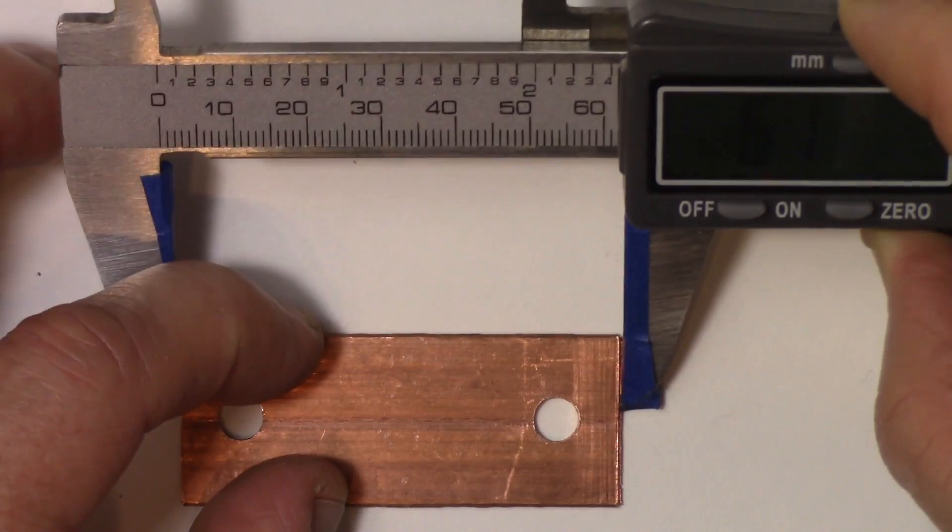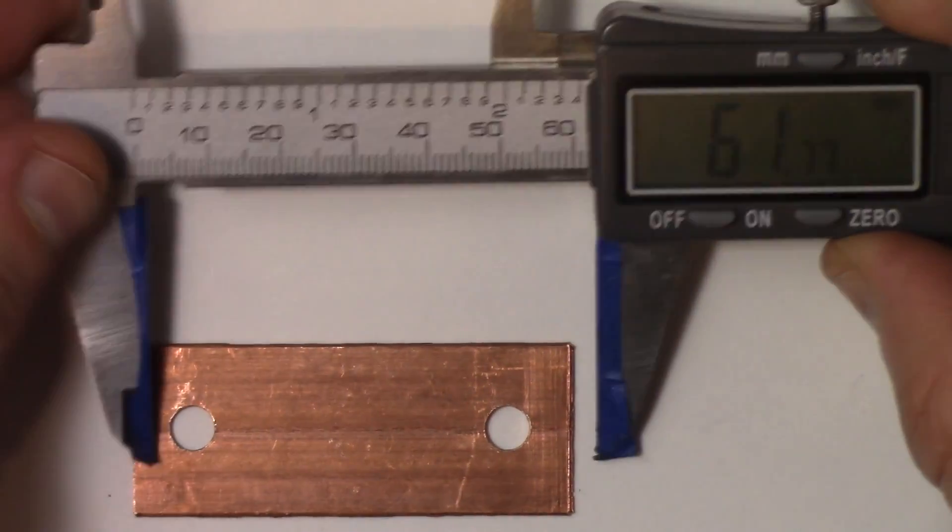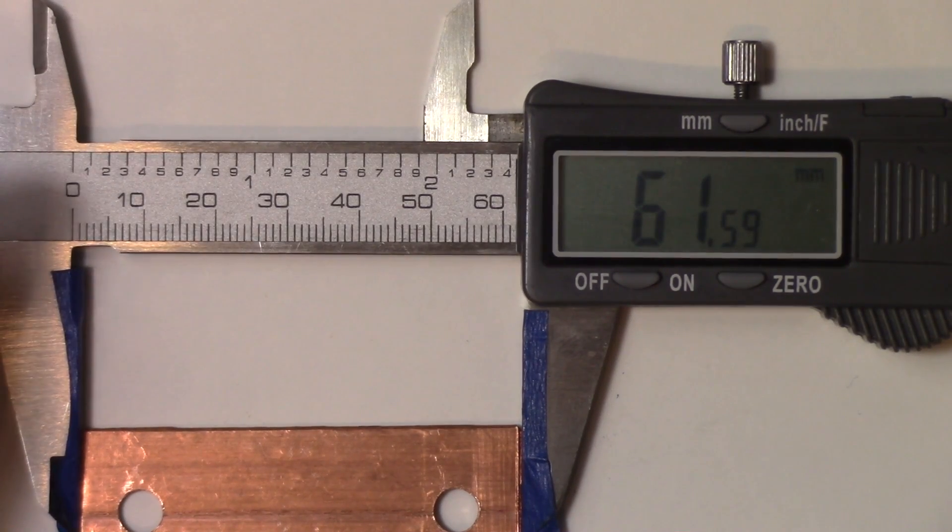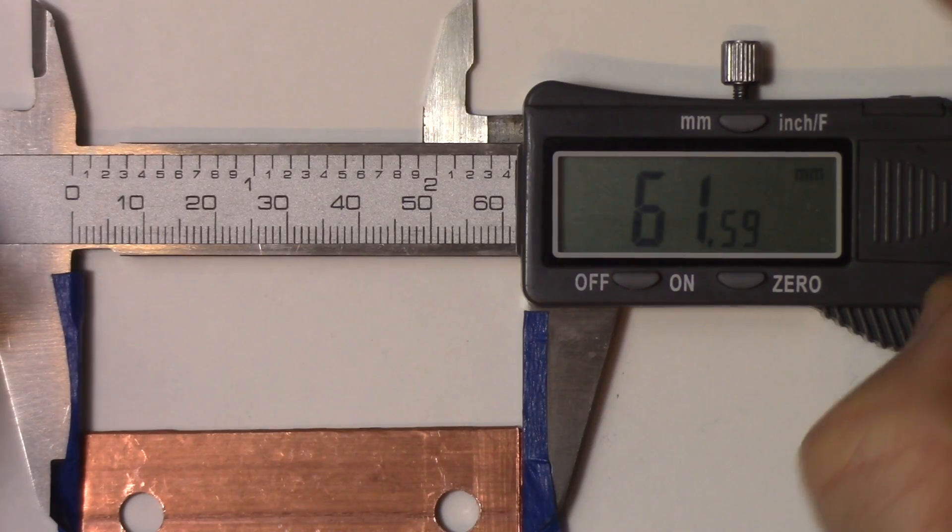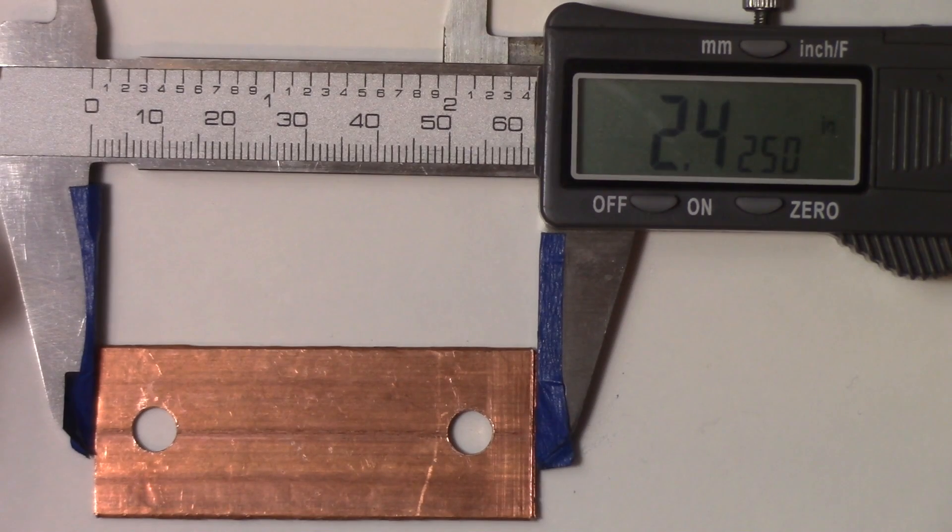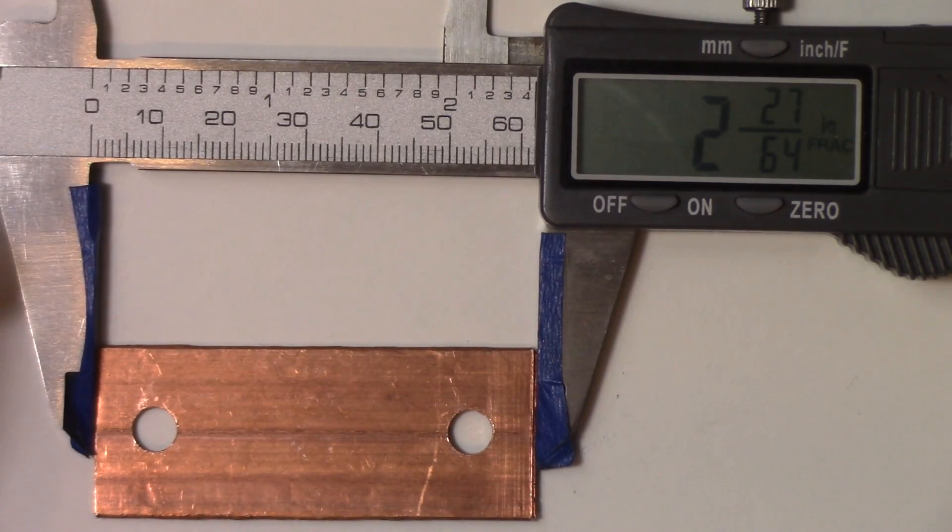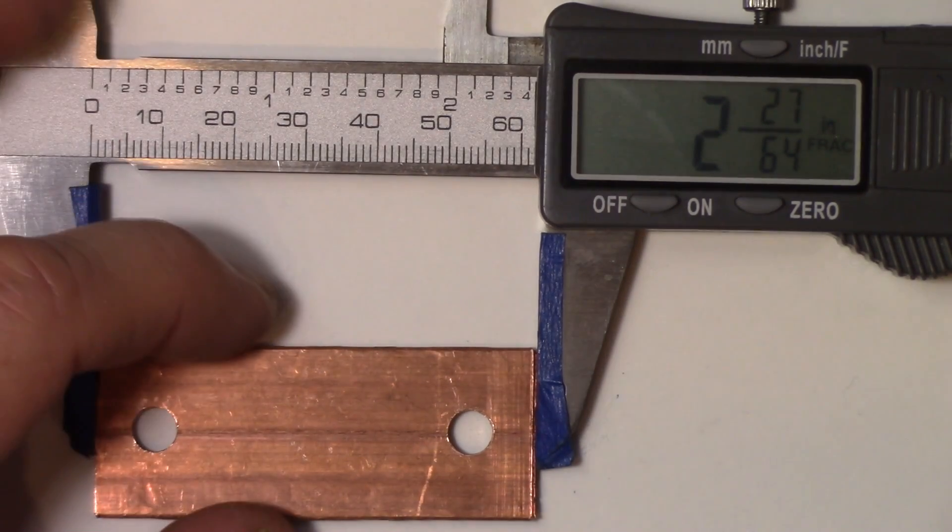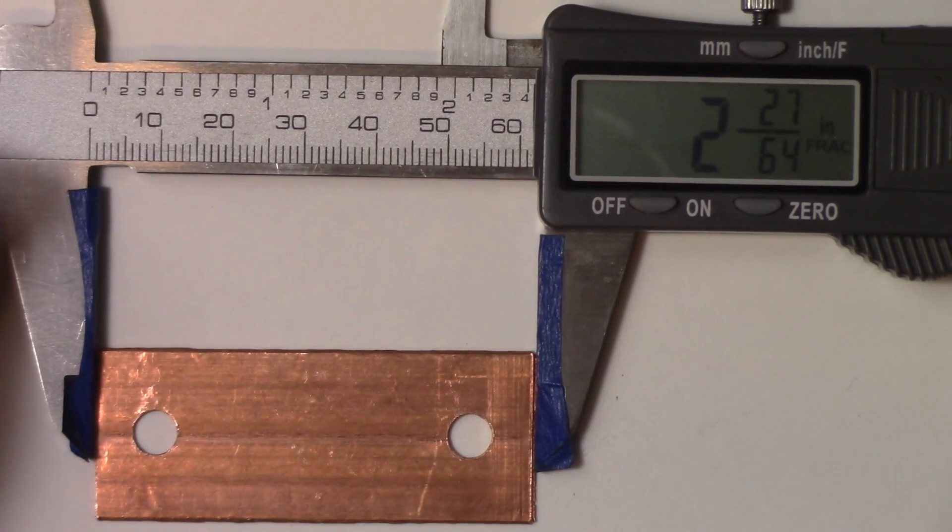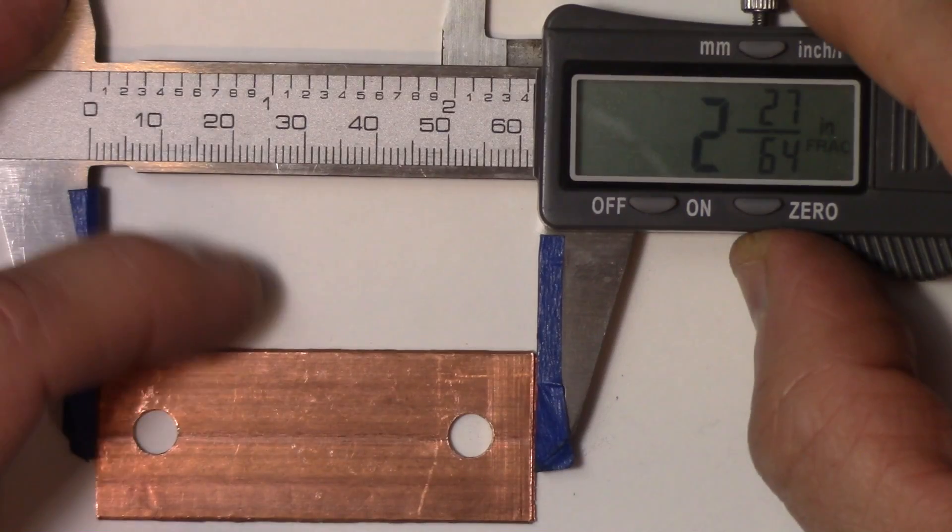So for length I've got 61.59 or 61.5, you can vary it, it's up to you. In inches, that's 2.450 or 2 and 27-64ths. The width doesn't matter because when you crunch it down, the width is determined by the diameter of the pipe.